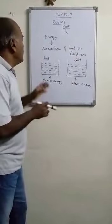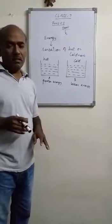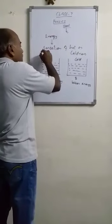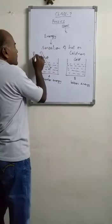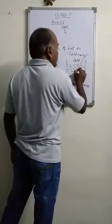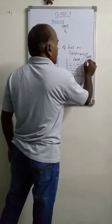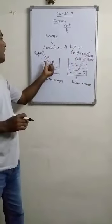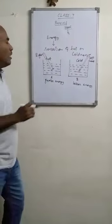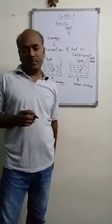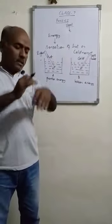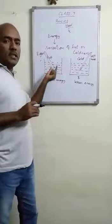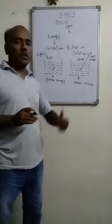Now I put my hand in these two containers — left hand on one container, right hand on another container. This is the right hand and here it is the left hand. When we put these two hands in two different containers, one containing hot water and another containing cold water, the right hand feels hotter and the left hand feels colder. It is because our body — that is our hand — is also having energy. And the energy possessed by our body and the hot water, and the energy possessed by our body and the cold water, are not the same.